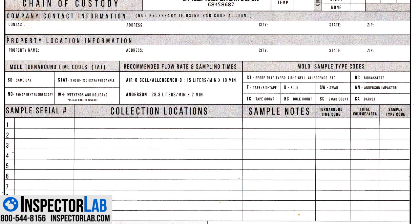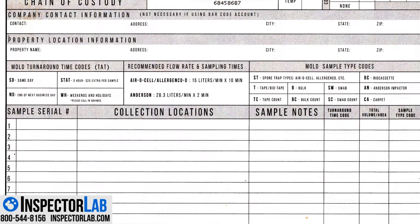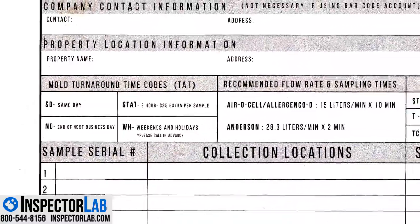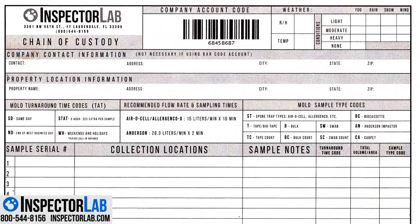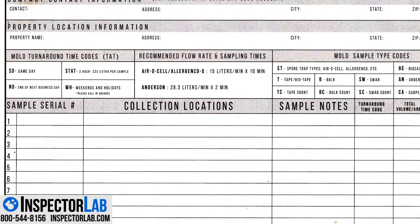Filling out the location information from the appointment speeds up the login process and reduces transcription errors. The turnaround time code, total volume over area, and sample type code are important, and the default information is on the chain of custody. It is most important to provide the total volume of air sampled if you are using Aerosols — this is normally 150 liters. The sample serial numbers should match the devices you are using. Swabs do not have serial numbers, so you should devise your own simple system for labeling them. Details on the Inspector Lab mold report will appear exactly how you enter them for the samples collected; sample notes will not appear on the report.